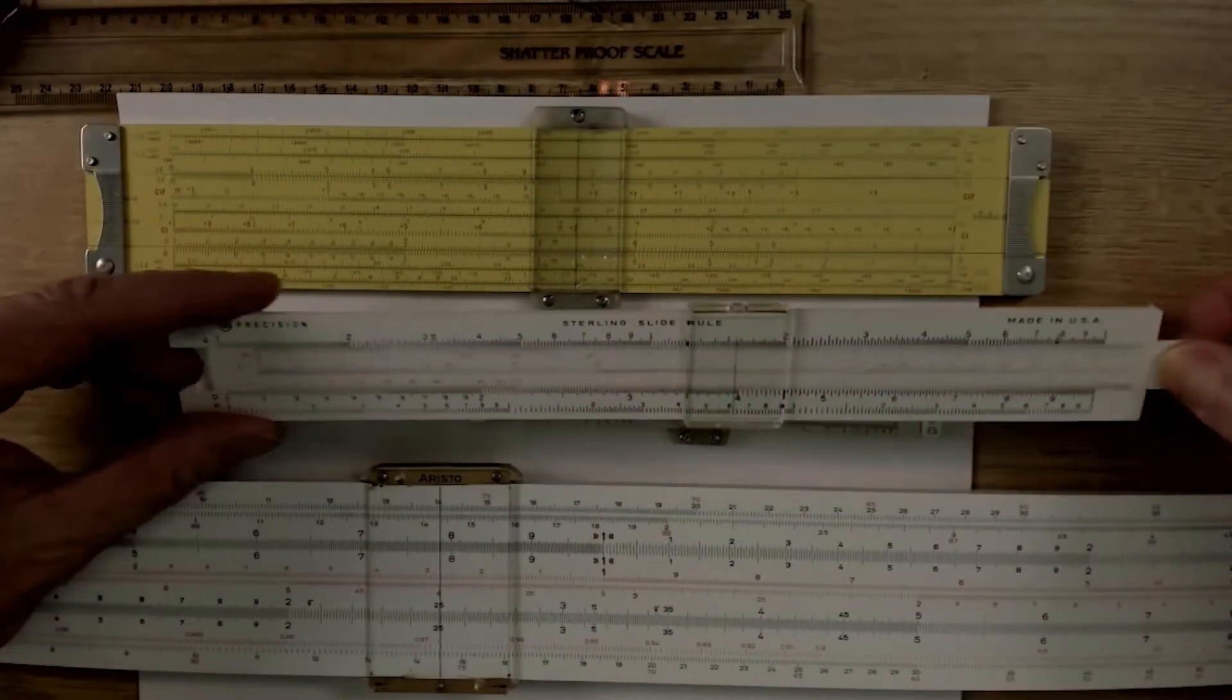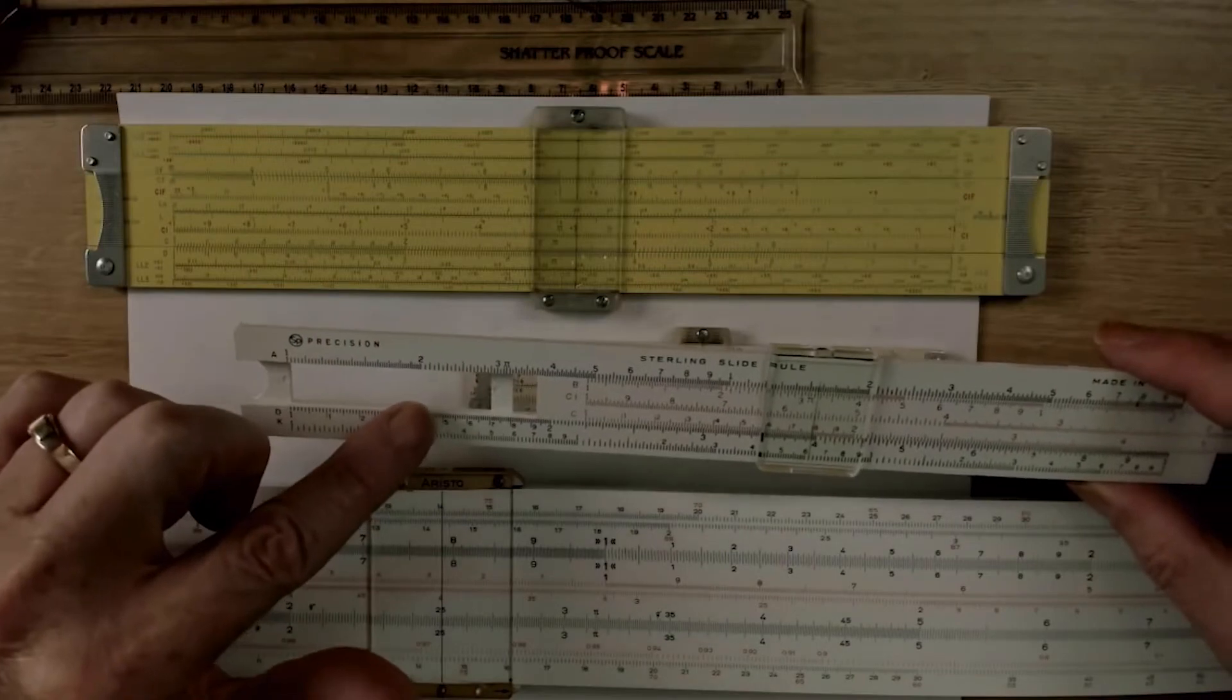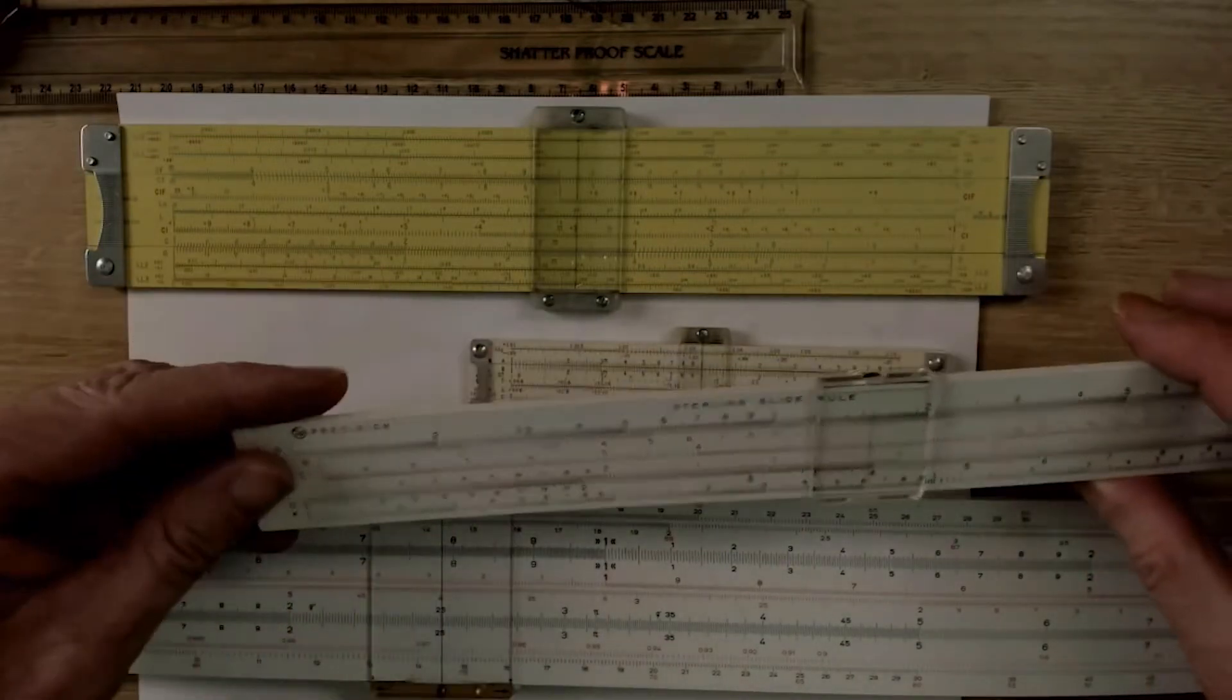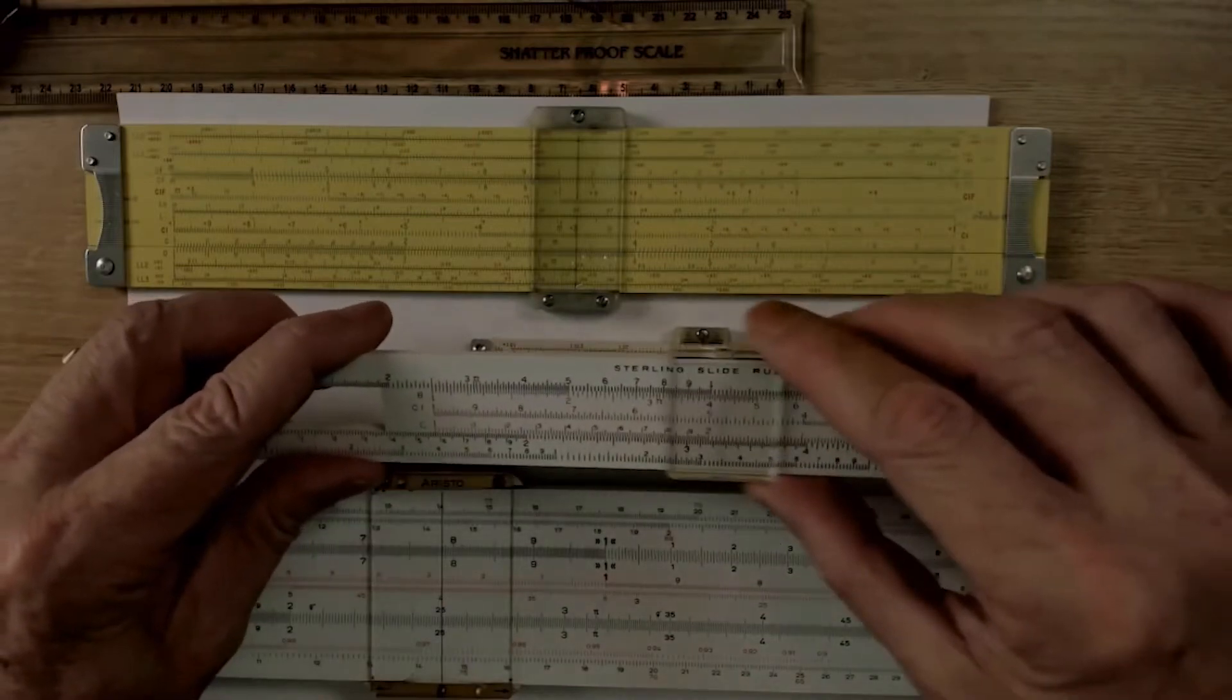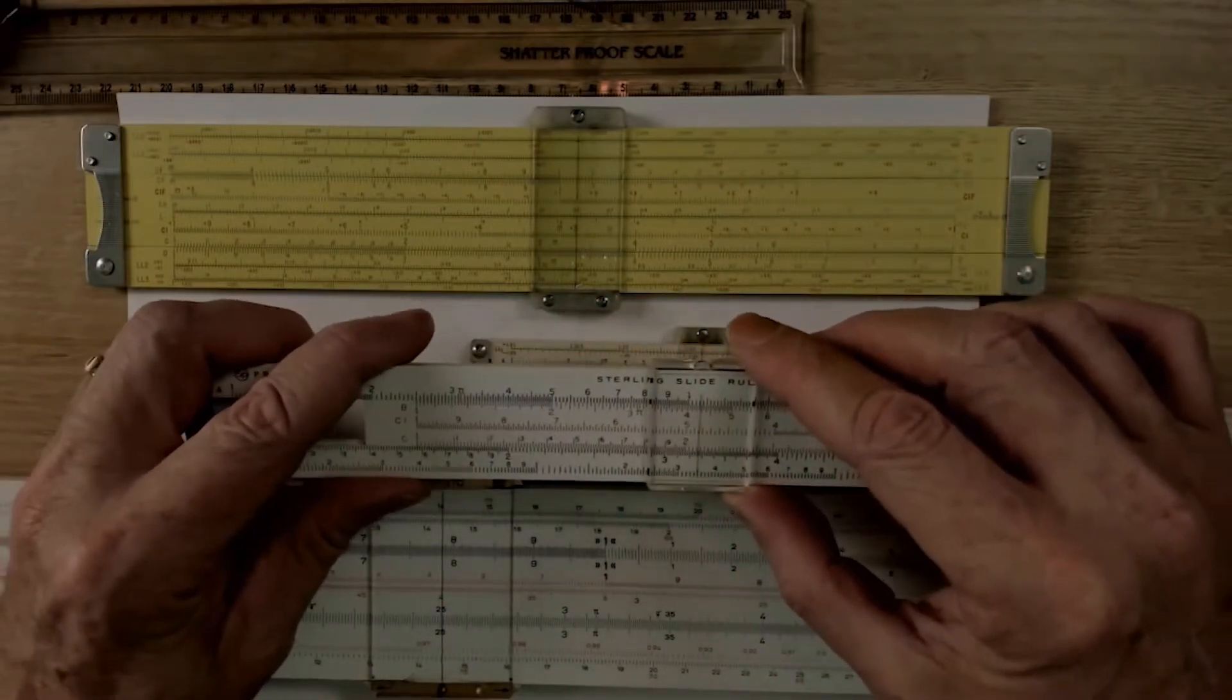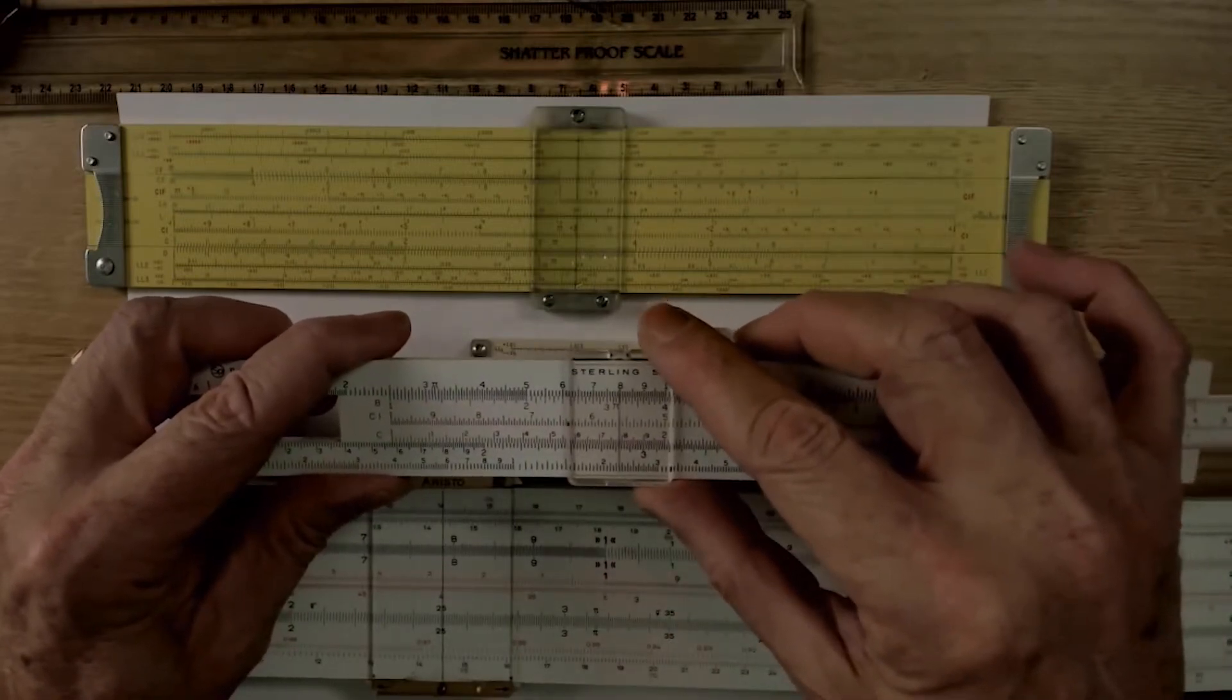So let's get going. Now, there are several parts to a slide rule. The first part is the body of the slide rule, which does not move. Then, of course, you have the slide in the middle. Then you have a movable piece of plastic or glass called a cursor. And on that cursor, you'll have what's called a hairline, which helps you line up numbers.